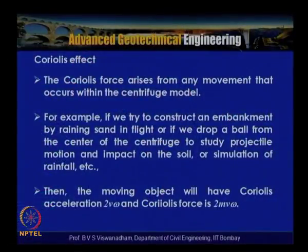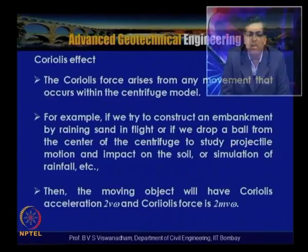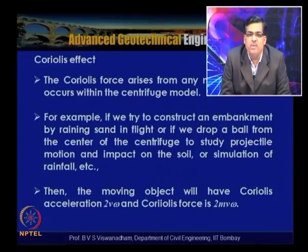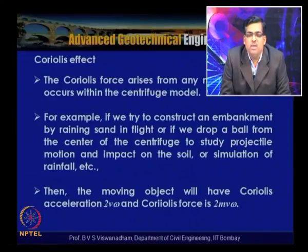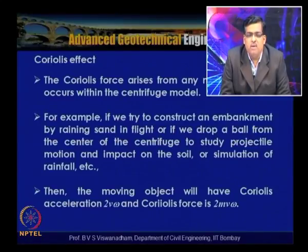The Coriolis force arises from any movement within the centrifuge model — for example, constructing an embankment by raining sand in flight, dropping a ball to study projectile impact on soil, or simulation of rainfall. These simulate climatic events or construction processes that lead to Coriolis accelerations. The moving object will have Coriolis acceleration A_c = 2vω, and Coriolis force = 2mvω, where m is the mass of the moving object within the model.